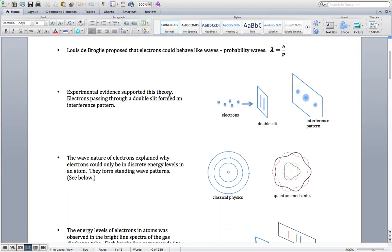There's experimental evidence that supported that theory. Electrons passing through a double slit formed an interference pattern. That's really weird. The electrons go through these two openings, like a diffraction grating. You would expect the electrons to go through one opening or the other, and then there would be two dots on the wall. But they didn't. They actually formed an interference pattern.